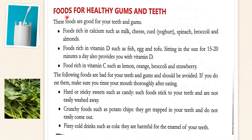Now let's see which foods are healthy for our gums and teeth. Foods rich in calcium — such as milk, cheese, curd (yogurt), spinach, broccoli, and almonds. Foods rich in vitamin D — such as fish, egg, and tofu. We can also get vitamin D by sitting under sunlight for 15 to 20 minutes a day. Foods rich in vitamin C — such as lemon, orange, broccoli, and strawberry. All these foods are good for our teeth and gums.